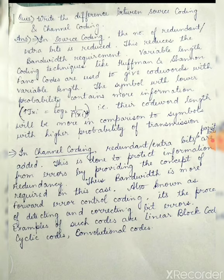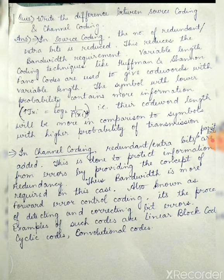Source coding is done by the source encoder. The basic concept behind source coding is that it removes the redundant bits — the extra bits are removed in source coding. Variable length coding techniques like Huffman codes and Shannon-Fano codes are used. These codes give code words of variable length, and the size of the code word depends upon the probability of occurrence of that symbol.